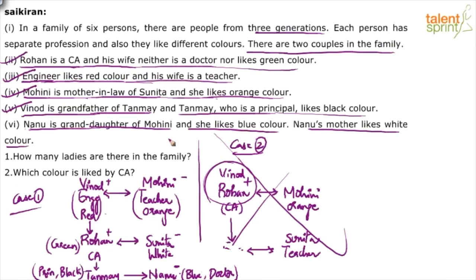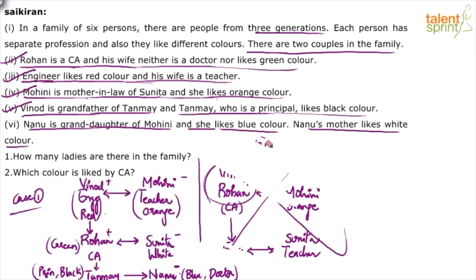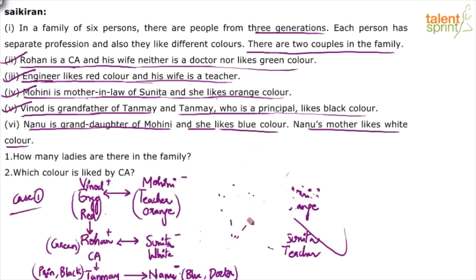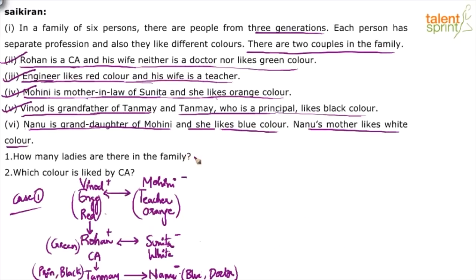Looking at the questions: First — how many ladies are there in the family? Answer: cannot be determined, because Tanmay's gender is not known. Second — which color is liked by the CA? The CA is Rohan, who likes green color. So the answer to the second question is green color.